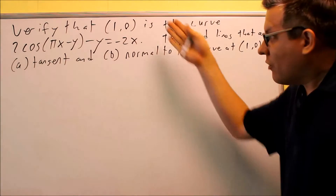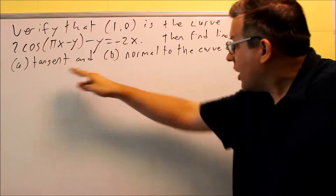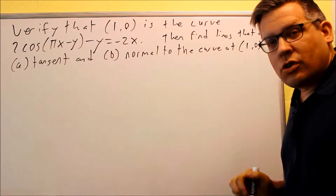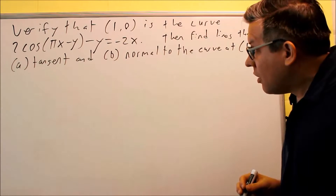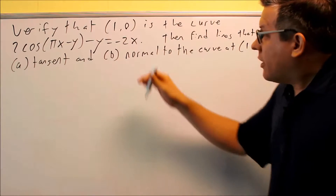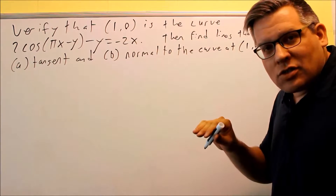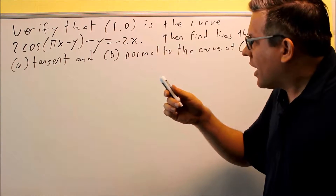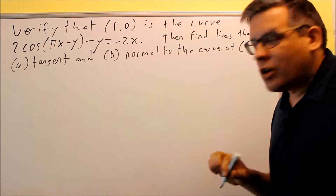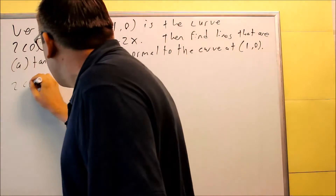We have another problem where we have to verify and then find the lines that are tangent and normal to the curve at a point. The first thing we want to do is the verification step. We've got to put a 1 in for x and a 0 in for y, so let's do that first.